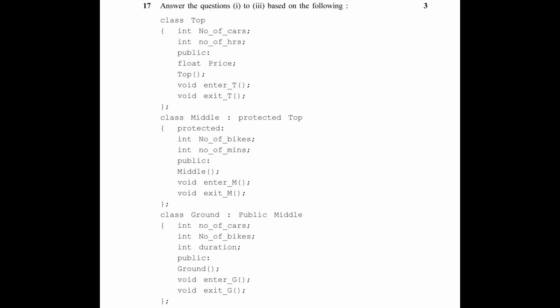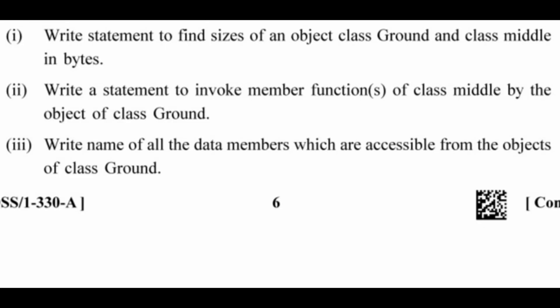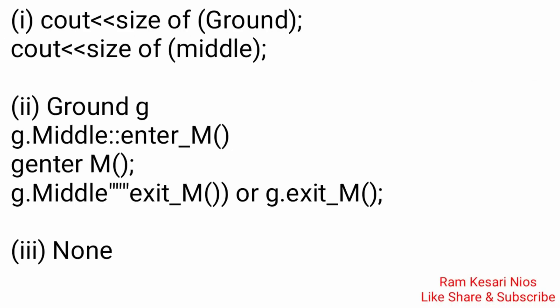Question 17: Answer the following based on the given code. 1. Write statements to find sizes of an object of class Ground and class MiddleInvites. 2. Write a statement to invoke member functions of class Middle by the object of class Ground. 3. Write names of all the data members which are accessible from the objects of class Ground. Pause the video and see the answer.